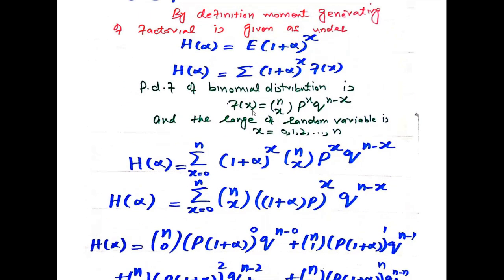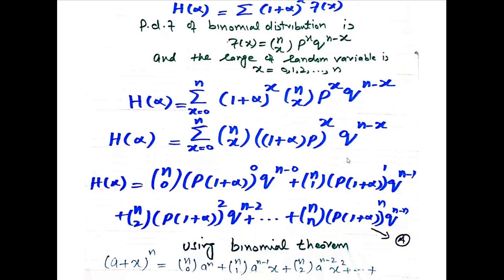Applying this range and PDF into the equation, h of alpha equals the sum from x=0 to n of (1 + alpha)^x times nCx * p^x * q^(n-x). Since (1 + alpha) and p have the same power x, we can combine them: nCx * [p(1 + alpha)]^x * q^(n-x), summed from x=0 to n.